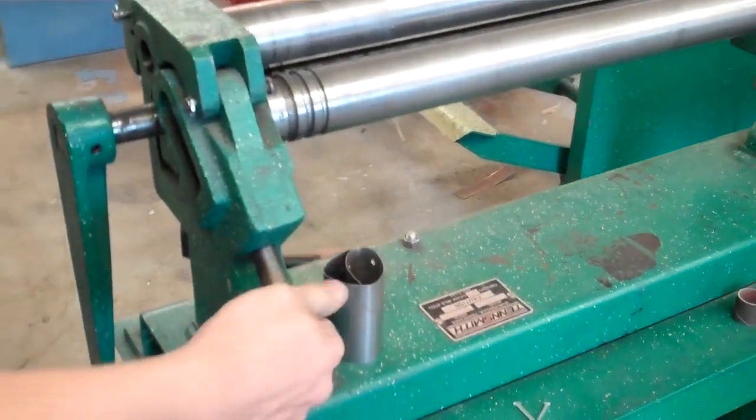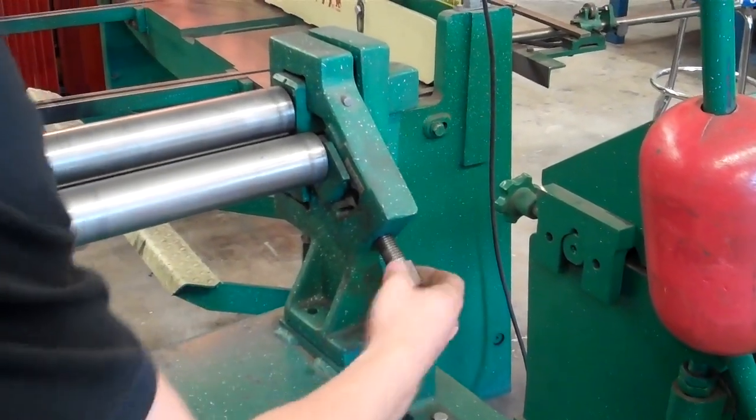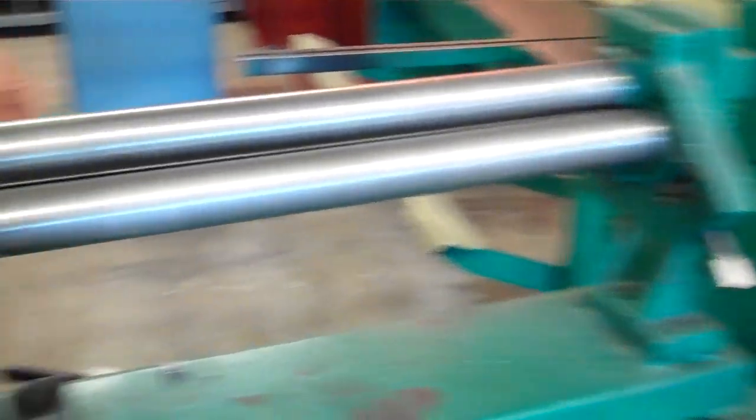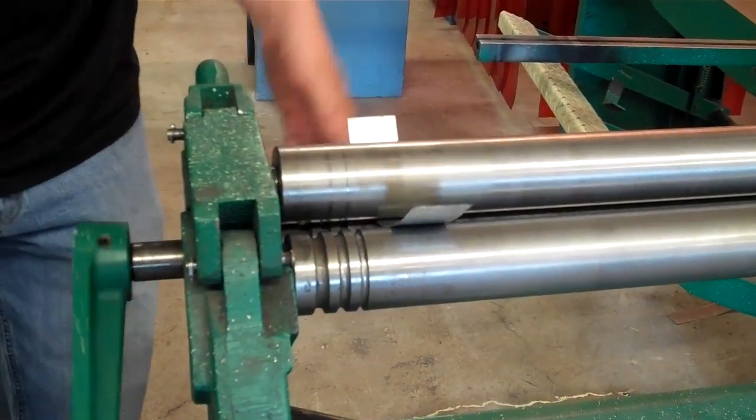And in order to adjust the radius, we can just turn these screws here. Push material through again. It'll give it something of a curve.